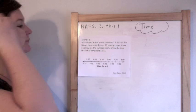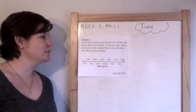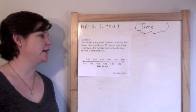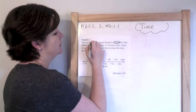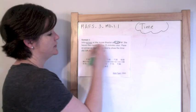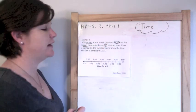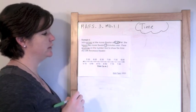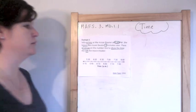Example 1. Julia — shout out to my little niece, Julia. Julia arrives at the movie theater at 5:30 p.m. She leaves the movie theater 75 minutes later. Place an arrow on the number line to show the time she left the movie theater.